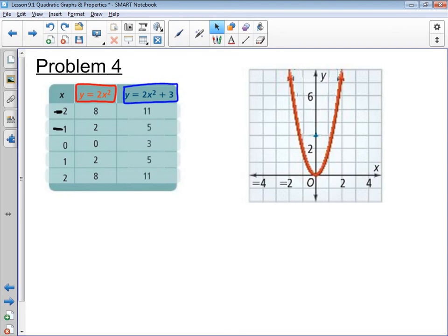Now, if I take that same function and add three to the end of it, my new values end up being eleven, five, three, five, and eleven. And when I graph that, I get this parabola.